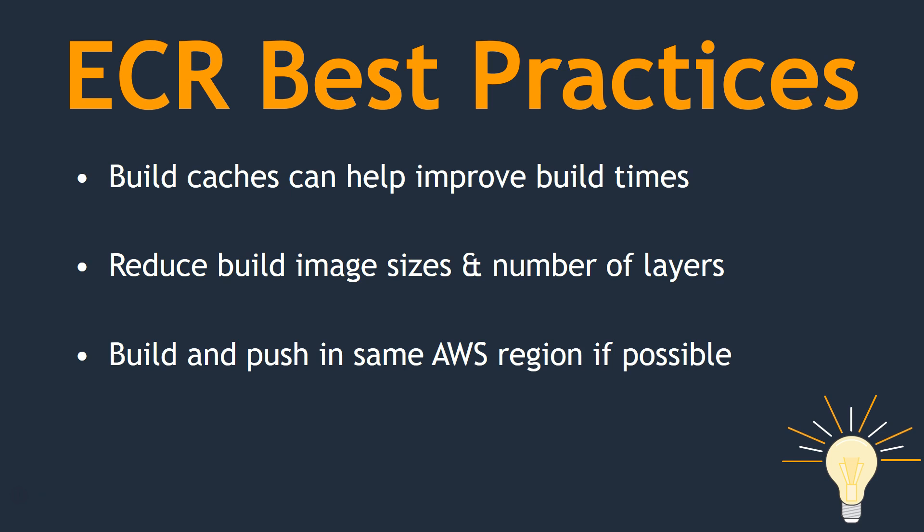Some more best practices: make sure you are using build caches. When building on the same Docker host, build caches ensure that your build times are considerably smaller because you are not pulling everything every time — the build happens incrementally from existing layers. By reducing build time, you also allow developers to commit more code and features into production. Reduce your image size and number of layers — Docker allows you to chain commands so that fewer layers get created, making images easier to manage and faster to roll back. Also, try to have your build and deployment environment in the same region, because pushing gigabyte images from one region to another means paying for bandwidth on both sides, increasing latency and the time required for developers to push and pull images.